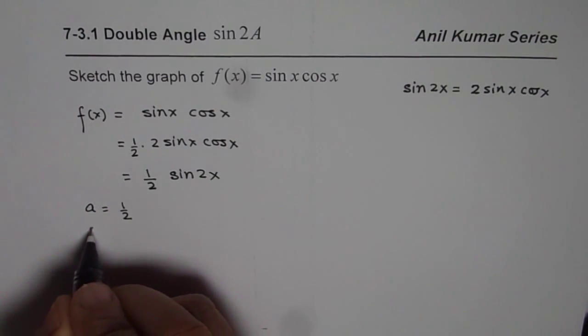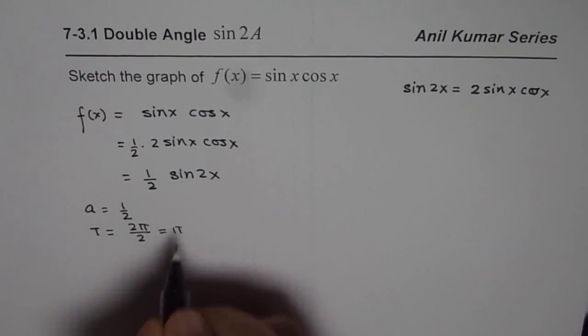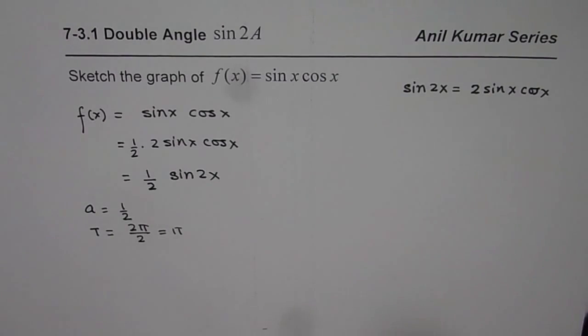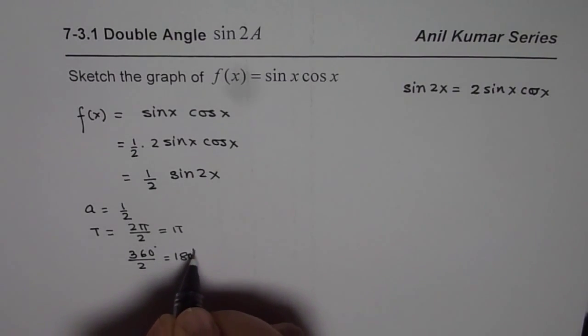And the time period will be 2 pi by 2 which is pi. And those of you who are doing it in degrees, there will be 360 degrees divided by 2 which is 180 degrees.